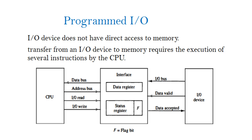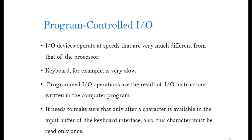Programmed I/O: In this mode, the I/O device does not have direct access to memory. Transfer from an I/O device to memory requires the execution of several instructions by the CPU. I/O devices operate at speeds that are very much different from that of the processor — for example, a keyboard is very slow.